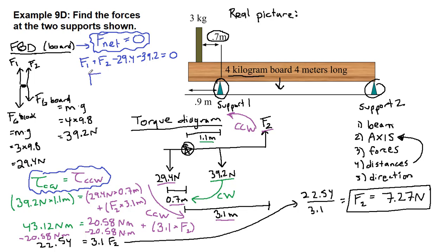So because we're looking for our unknown force one, we have to solve for it. So we'll add the 29.4 to both sides. We'll add the 39.2 to both sides, and we'll subtract off the 7.27 on both sides. So our force, then, is 61.33 newtons for the left support.